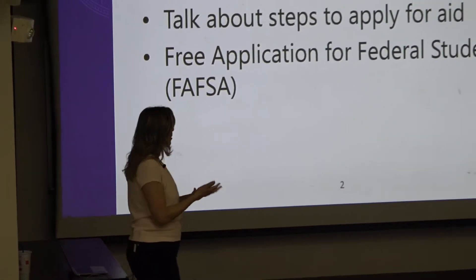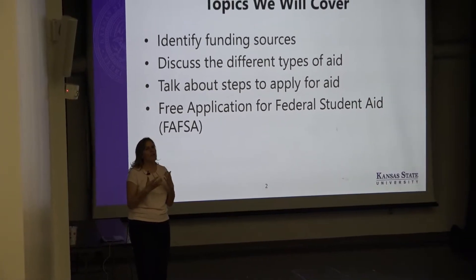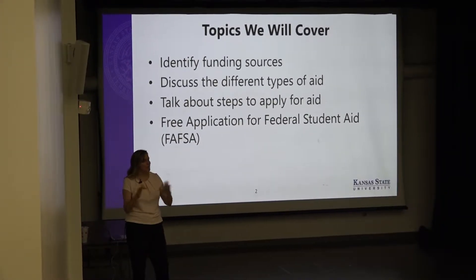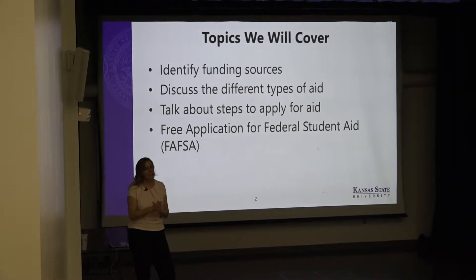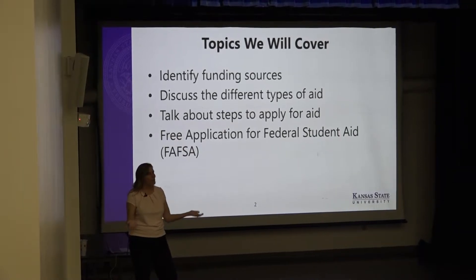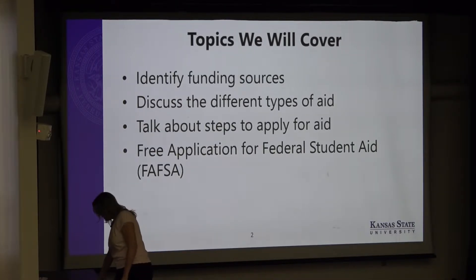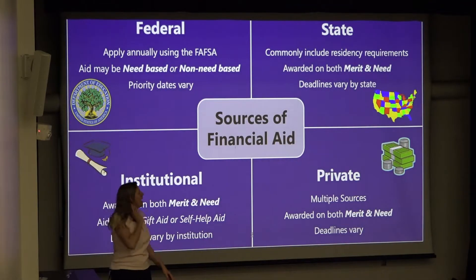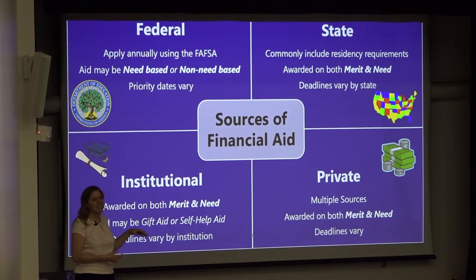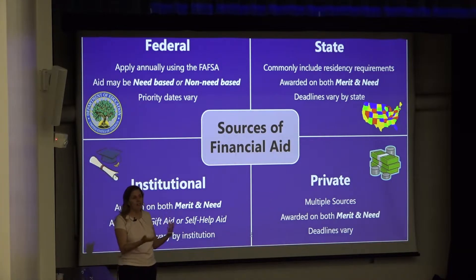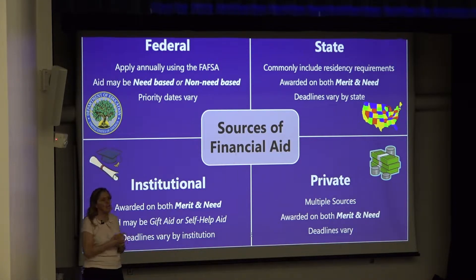As far as things we plan to cover tonight: my strategy is first to talk about the different funding sources of financial aid, then to talk about the different types of financial aid and kind of marry those things up, and then we'll spend time talking about the Free Application for Federal Student Aid — the FAFSA. There are four main sources of financial aid: federal, state, institution, and private. The federal source is the largest source, and those are covered through the completion of the FAFSA.